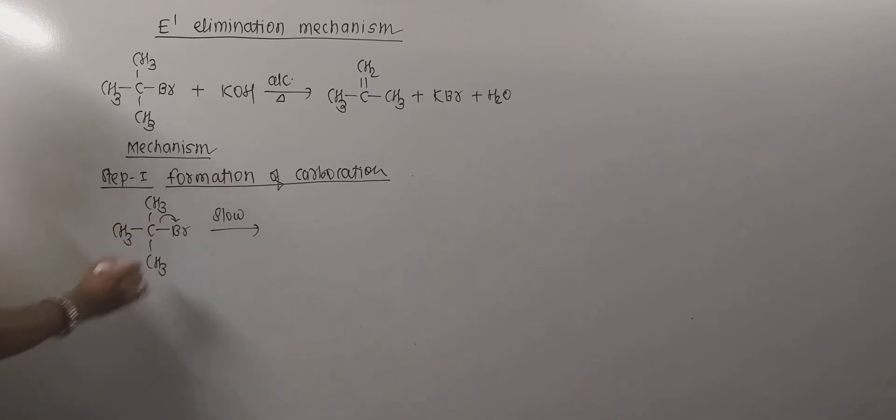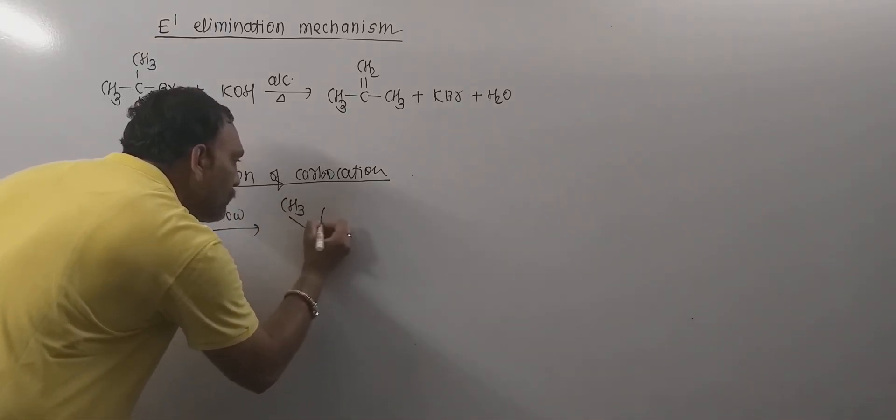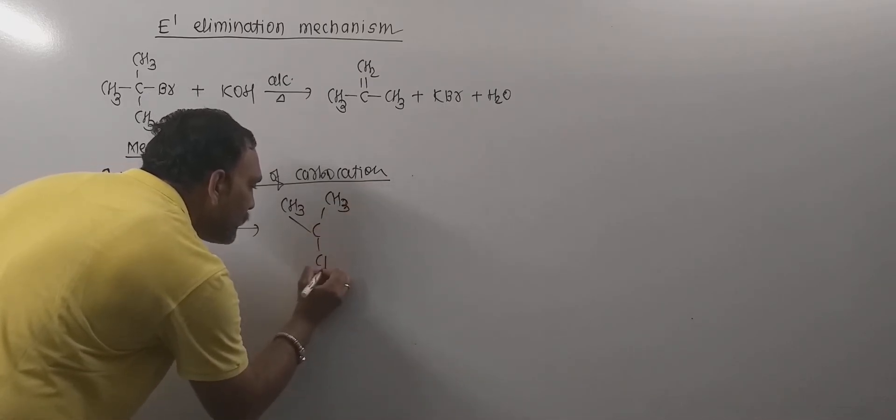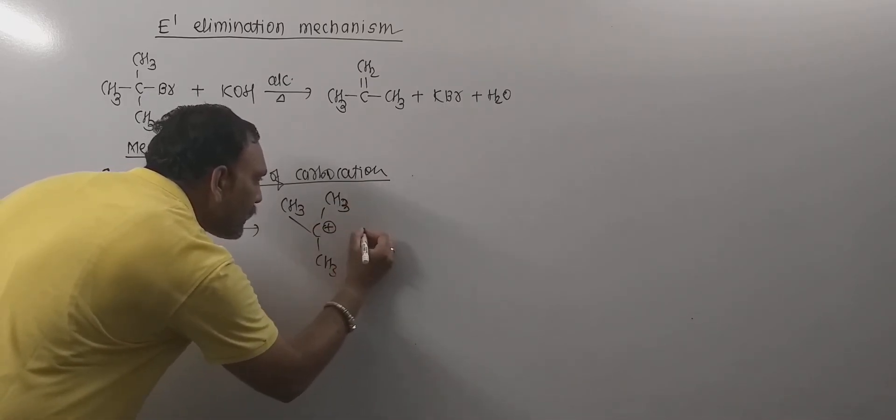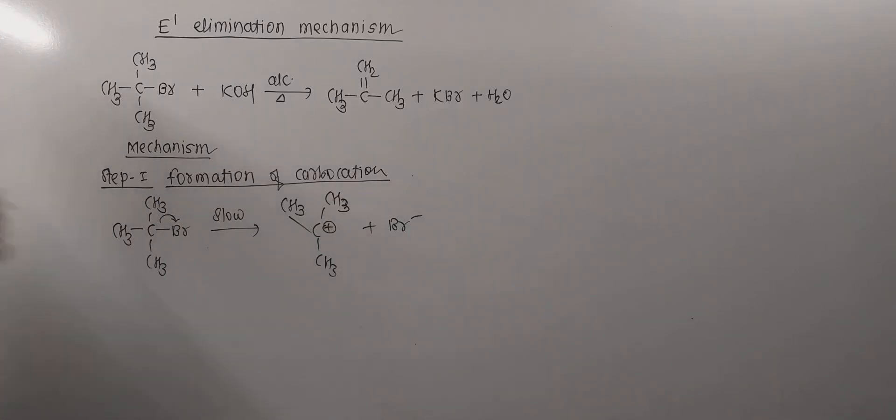Right here, the bromine gets removed ultimately from the carbon, leading to the formation of a carbonium ion. The intermediate so obtained is tert-butyl cation, which can be given as shown.